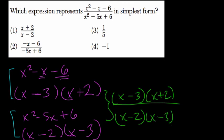What cancels out nicely are the x minus 3's. We have x plus 2 over x minus 2. Choice 1.